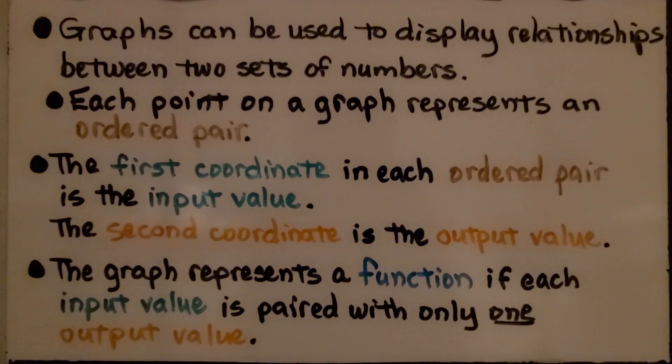Each point on a graph represents an ordered pair. The first coordinate in each ordered pair is the input value. The second coordinate is the output value. The graph represents a function if each input value is paired with only one output value.